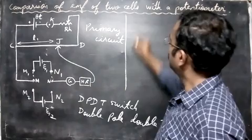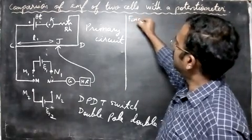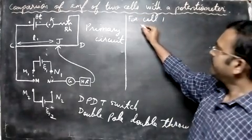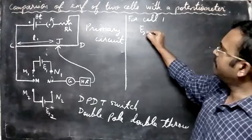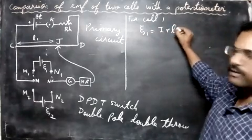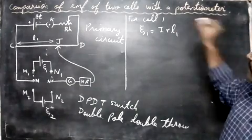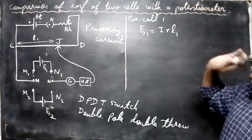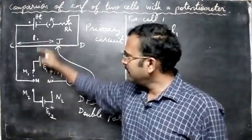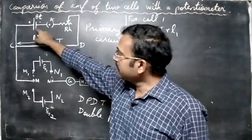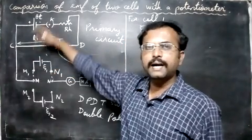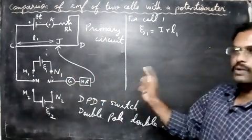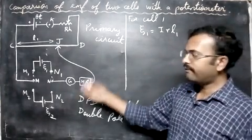So for cell one, the EMF of the cell - EMF E1 is equal to IRL. We learned the formula. So instead of that we write as IR L1. I means the current, R is the resistance per unit length, and L is the balancing length. So this is for cell one.